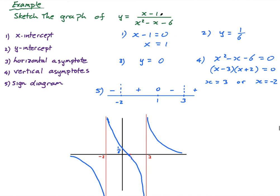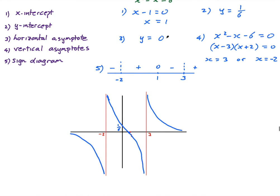That is the function x minus one over x squared minus x minus six drawn out. Depending on the question, if it asks for the equations of vertical and horizontal asymptotes, you write them down: x equals negative two, x equals three for vertical asymptotes, and y equals zero for the horizontal asymptote.